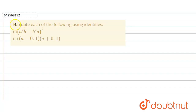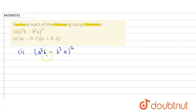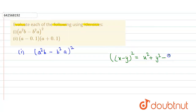In the given question, we have to evaluate the following using an identity. The first part of the question is (a²b - b²a) whole square. We expand this algebraic expression using the identity: (x - y)² = x² + y² - 2xy.